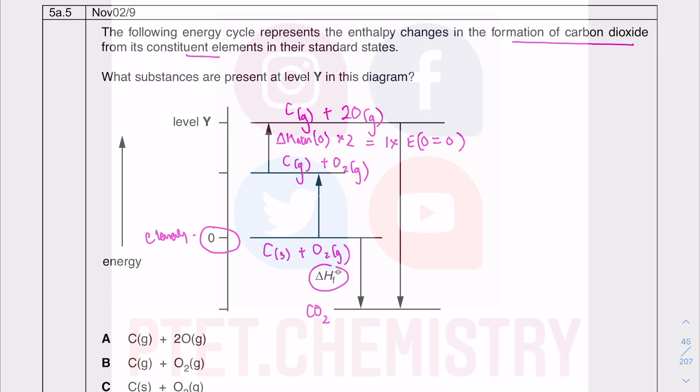So this one there, I assume will be the atomization of carbon. But equally, these two could be the other way around. But essentially, at level Y, you must have the free gaseous atoms. So it has to be the free gaseous atoms. Then the free gaseous atoms recombine and they form the bonds to give you CO2 there. So the answer there must be A.